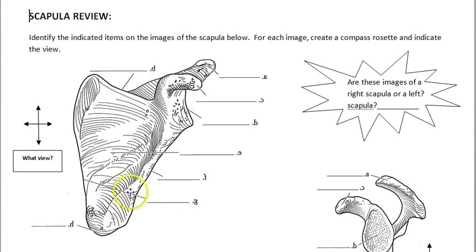So let's take a look at this first view right here. I hope you figured out that this is an anterior view. And this is going to be the superior side, inferior at the bottom. We know lateral is over here on this side because of the glenoid fossa, which is right there. And then this would be the medial side, so that will be sufficient enough to complete the compass there.